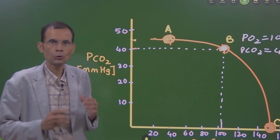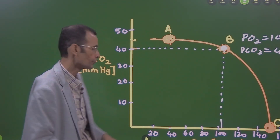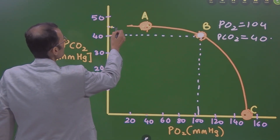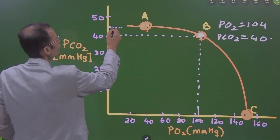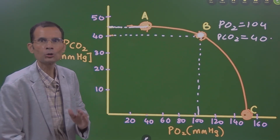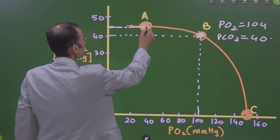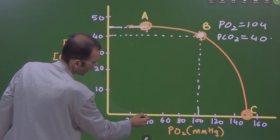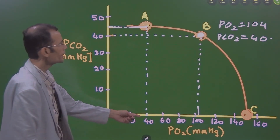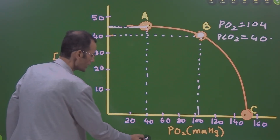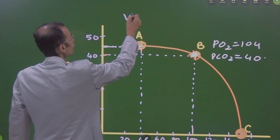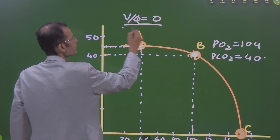Point A shows us this particular scenario. If you look at point A, on the vertical axis PCO2 is 45, and if you drop a vertical line to the horizontal axis, PO2 is only 40 mmHg. So point A is telling us that the V/Q ratio is zero at this point.